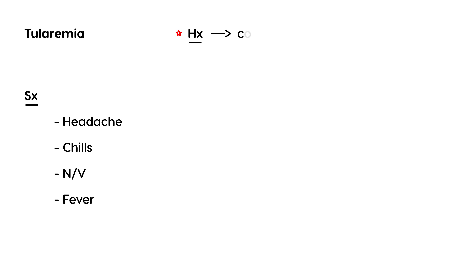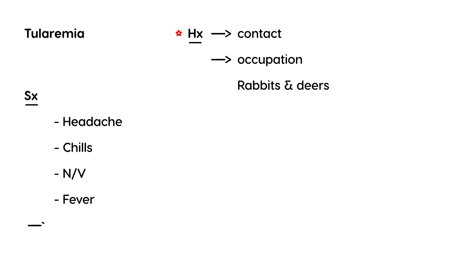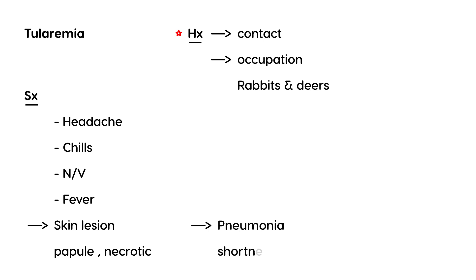Talk to the person: Did you have any contact or exposure? What do you do for a living? What's your occupation? It's very difficult because nobody really thinks about rabbits and deer unless you live in an area endemic to this. Fortunately, some signs are a little less general. The one that stands out in clinical vignettes is the skin lesion at the site of exposure — usually a papule that can sometimes be necrotic. The person can also progress to pneumonia with shortness of breath.